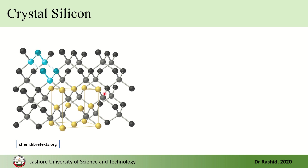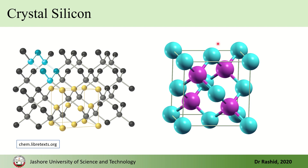If you look at the crystal structure, silicon — like diamond — has a diamond cubic structure. Looking at the unit cell, you see corner atoms, atoms at each face, and also atoms inside the cube. I have colored them differently to make visualization easier. The edge length of this unit cell is 5.43 ångströms.